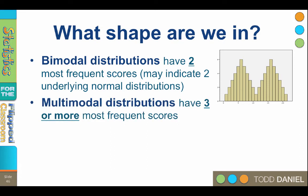A multimodal distribution has three or more most frequently occurring scores. You may wonder why we don't call it a trimodal or quadrimodal distribution. The answer is that when we start getting three, four, or five modes, there is something very wrong in our data set. Three or more modes is multimodal and it's a problem — we need to figure out what is going on before we try to analyze those data.